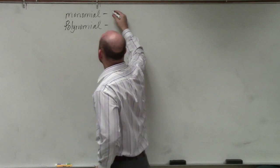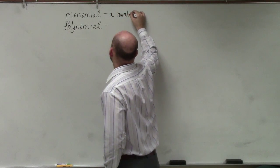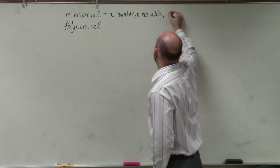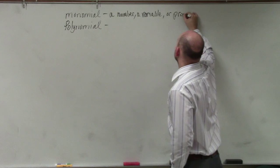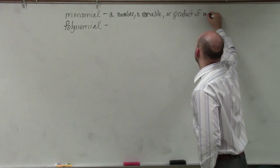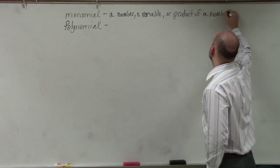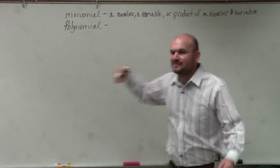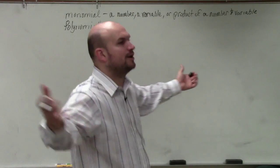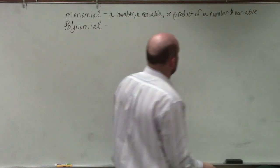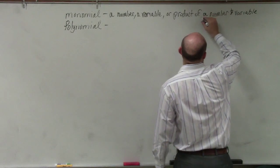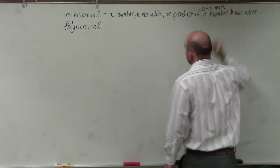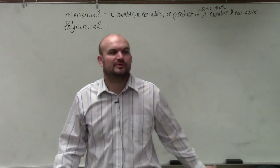All right, so a monomial is basically a number, a variable, or the product of a number and variable. That could be a product of one or more. Because in reality, you could have more than one.